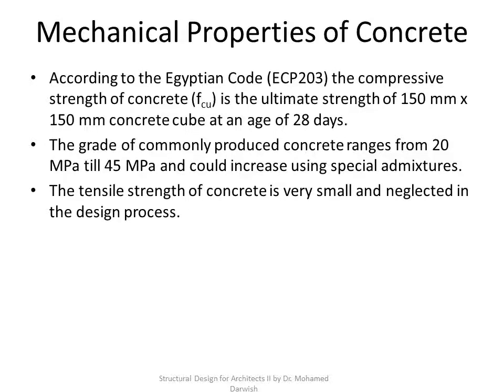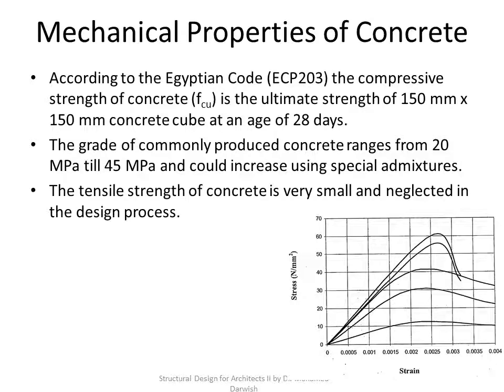In general, the tensile strength of concrete is negligible compared to the compressive strength — about 5 to 10 percent of the compressive strength. The stress-strain diagram for different concrete mixes reaches different ultimate strengths, but at the end of the day they all have a similar trend in shape.